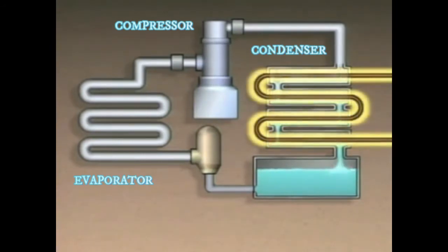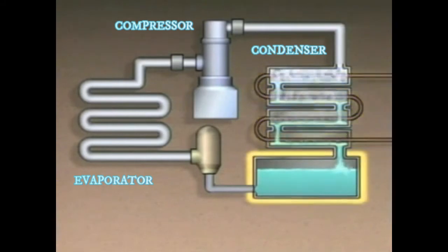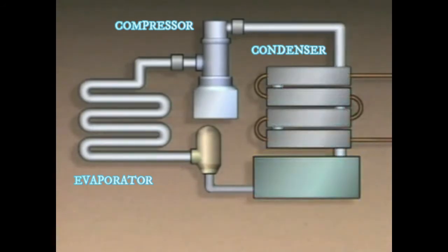A cooling fluid, which is usually air or water, receives heat from the refrigerant in the condenser. The refrigerant that condenses in the condenser collects in a receiver, where the liquid refrigerant is stored until it flows into the expansion step of the cycle, which is carried out by a device called an expansion valve.